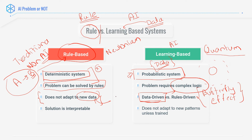In a learning-based system, you simply retrain it on new data and it will learn the new rules present in that data. So it is retrainable, whereas a rule-based solution is not retrainable.